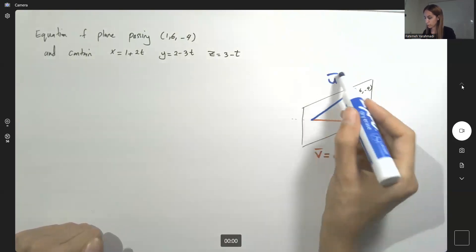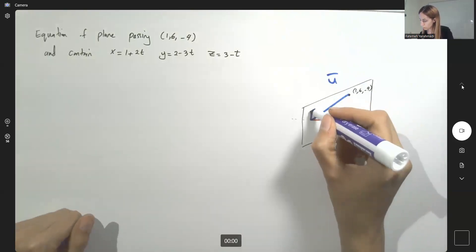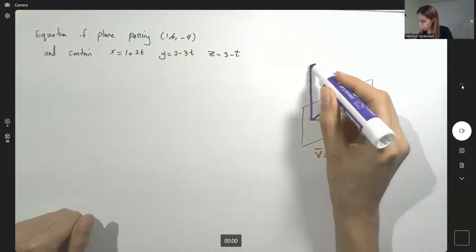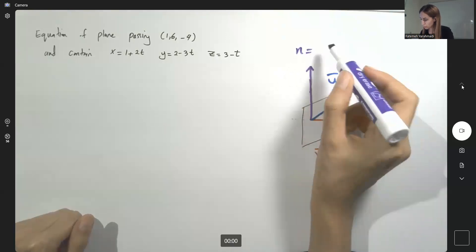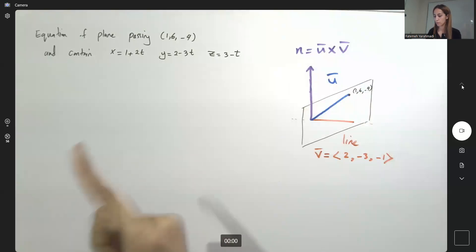then I can find the cross product between u and v and find a normal vector for this plane. I'm going to use a different color. This guy is the normal vector of the plane u cross v. This is what we're going to do.